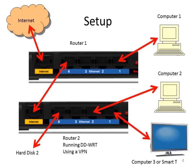Physically, the main connections are: the computers of router 2 and the smart TV of router 2 are plugged into the ethernet connection. The internet connection of router 2 is plugged into the ethernet connection of router 1, and the internet connection of router 1 is connected into the modem in order to access the internet.